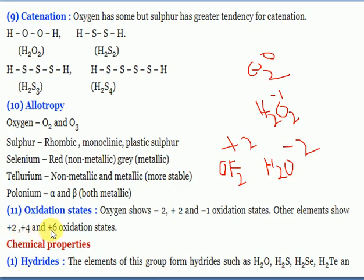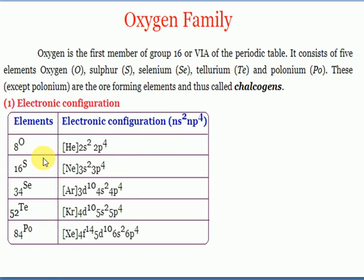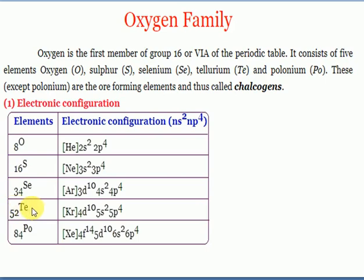Other elements show +2, +4, and +6 oxidation states. For the +4 oxidation state, stability increases from sulfur to selenium to tellurium - tellurium's +4 state is most stable. For the +6 oxidation state, sulfur is most stable; stability decreases going down: S > Se > Te > Po. Oxygen never exhibits +6 oxidation state.